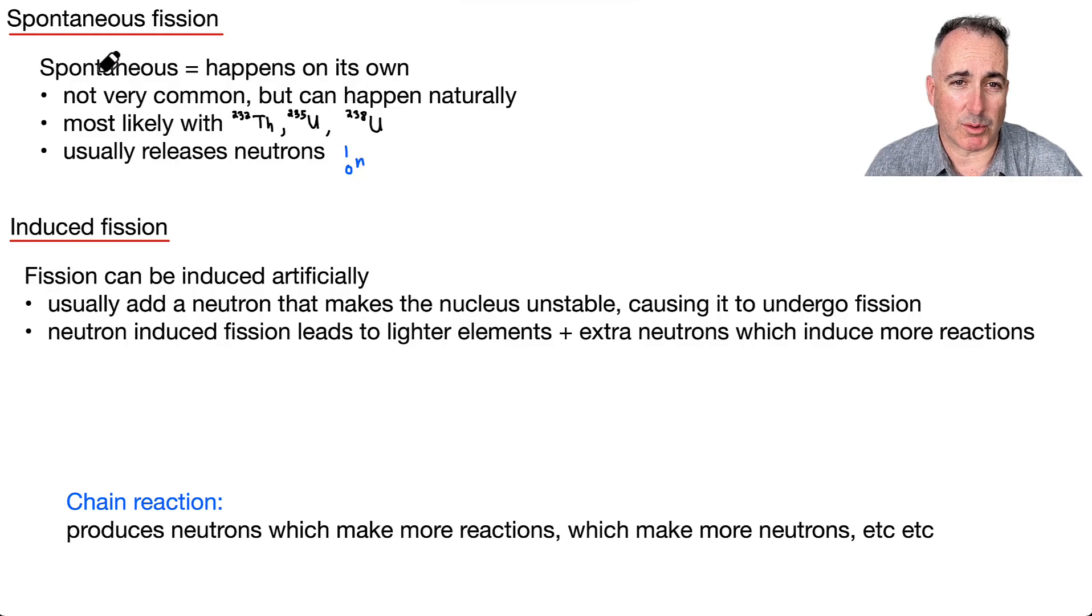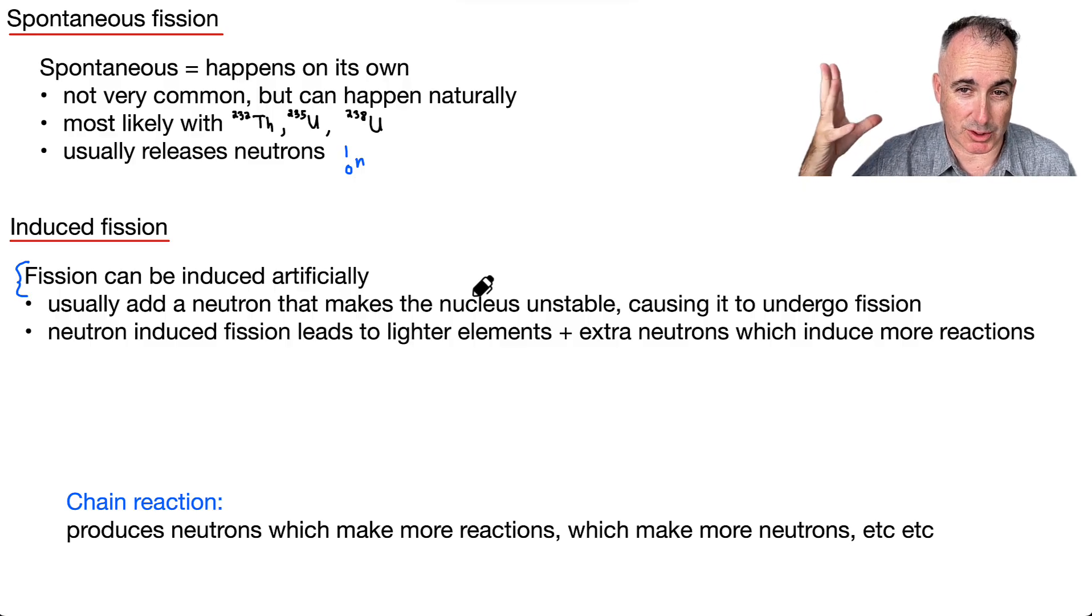That's not really what we're going to be concerned with. Mostly we're going to be looking at induced fission, where you cause it to happen. You're going to cause this artificially. Usually you add a neutron, and that's going to make the nucleus unstable, and that's going to cause it to go through fission. It's going to make some new elements, some new nuclei. And in that process you create new elements, but that means you also have your binding energy. You have this energy released when you made new elements, and you also have some extra neutrons that fly out.